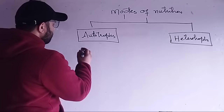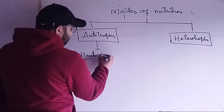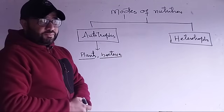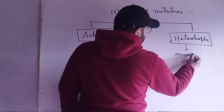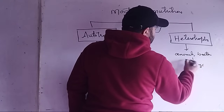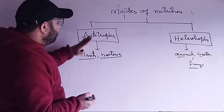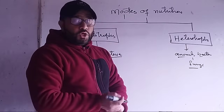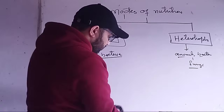No tension needed. Let's go to the example of autotrophs. Some plants are autotrophs; all plants are. There are also many bacteria that are autotrophs. In heterotrophs, we keep animals, many bacteria which are heterotrophs, and fungi. An example question can come: which of the following shows autotrophic nutrition? You need to understand what is the autotrophic mode of nutrition and what is the heterotrophic mode. Today we'll discuss the autotrophic mode of nutrition.